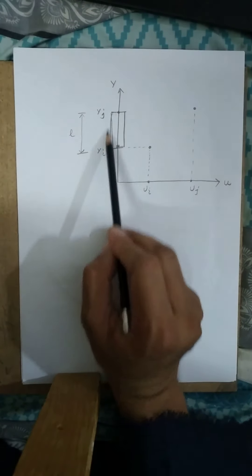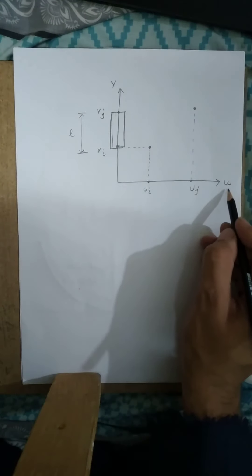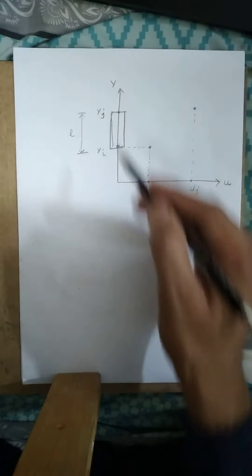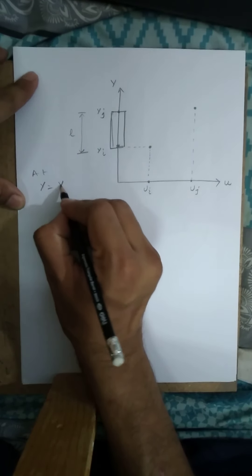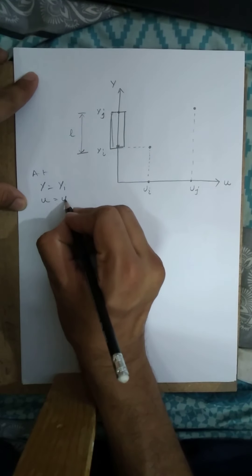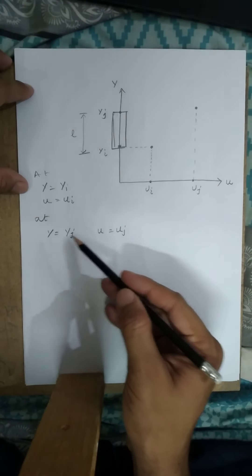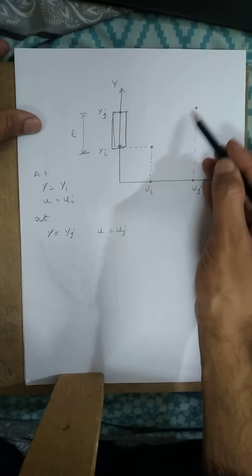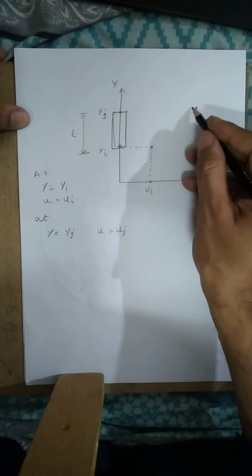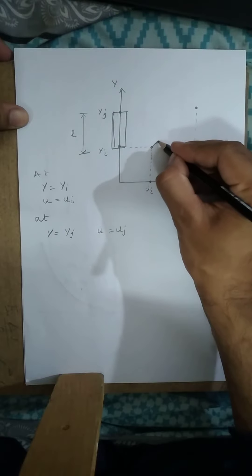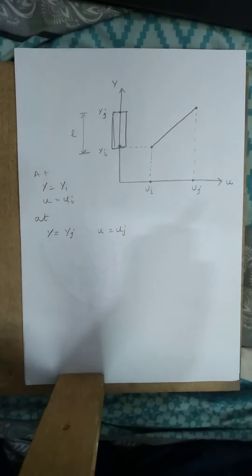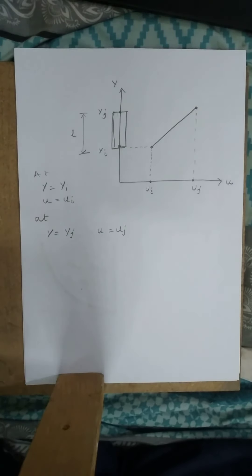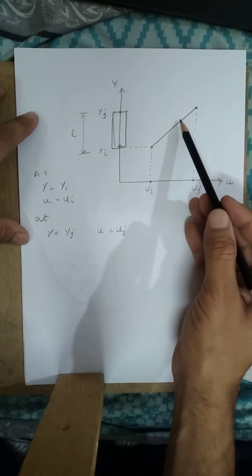For example, here we have a graph in the y-direction showing deformation along a whole element. At y equals yi, the deformation u equals ui. Similarly, at y equals yj, u equals uj. Because we solve in the middle of the element using a linear shape function, we join these two points with a line — this is linear interpolation.